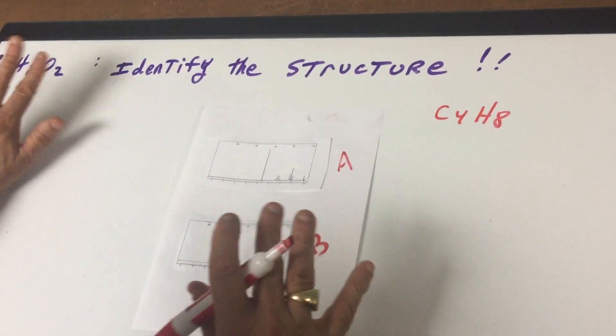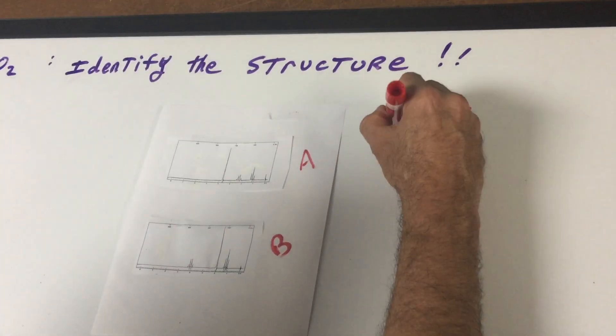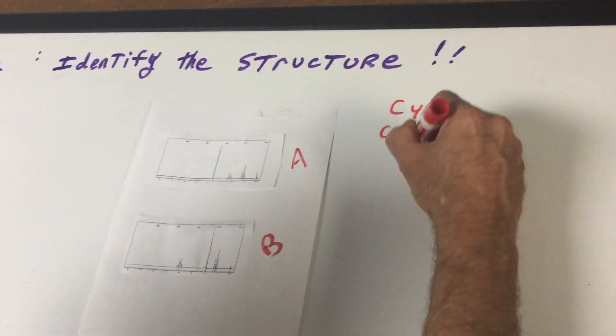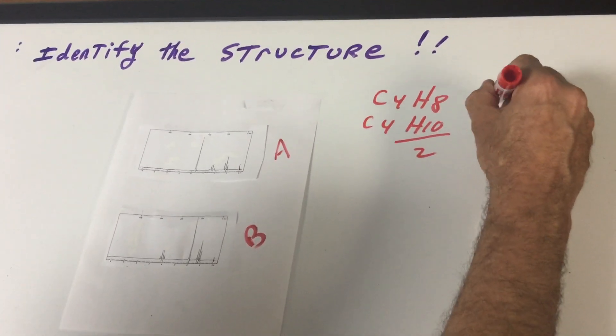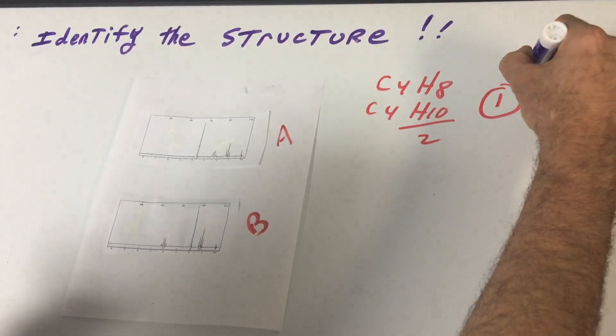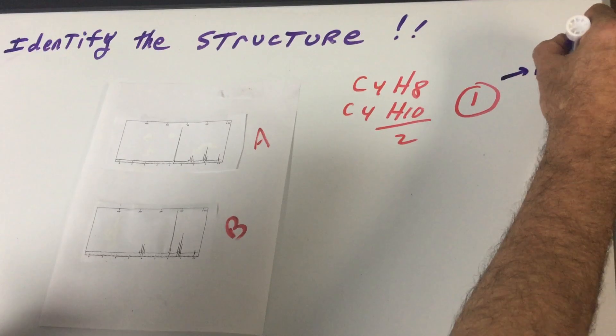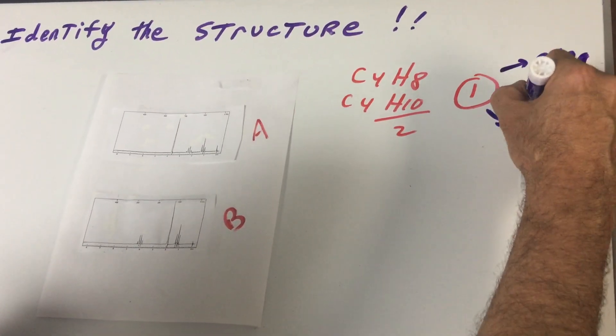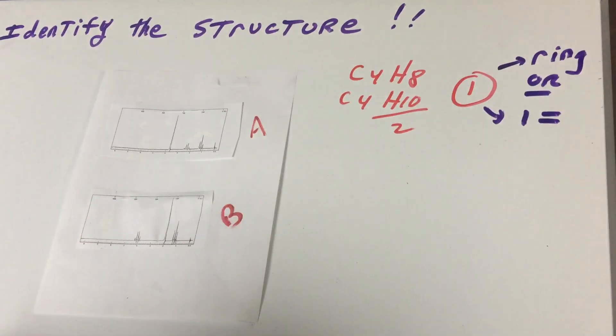I write down the original, you don't count the hydrogens. Underneath it you write the nearest alkane with the same number of carbons, subtract the difference and then half it. So that means there's one degree of unsaturation. If there's one degree of unsaturation, it means the compound has a ring or one double bond.